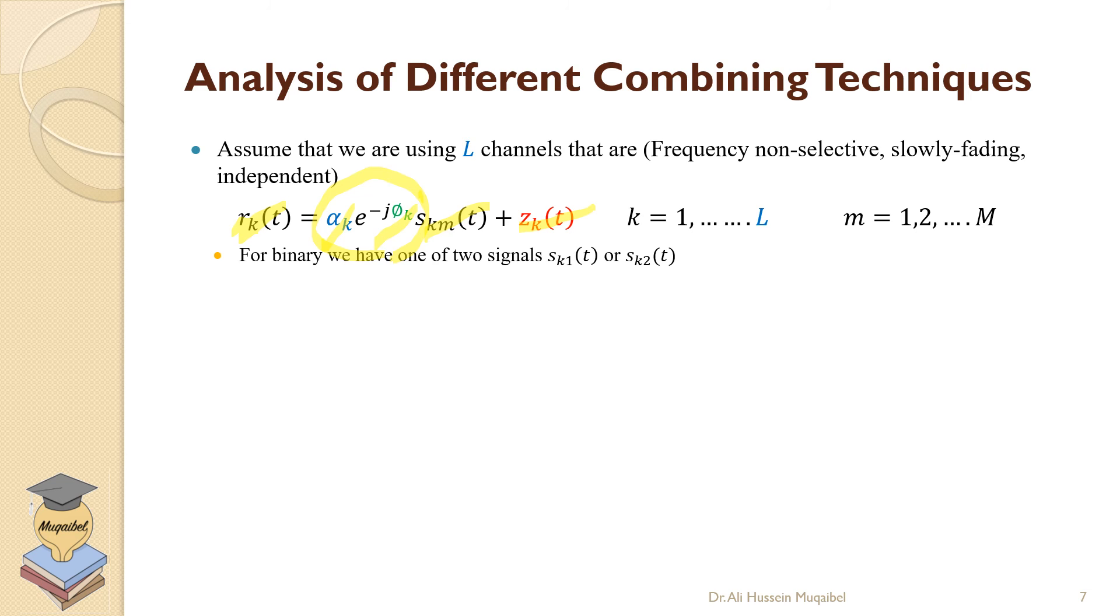In case of binary, we have just two signals and then we have small m equal to one or two. The optimum modulator for the signal received from the kth channel consists of two matched filters.